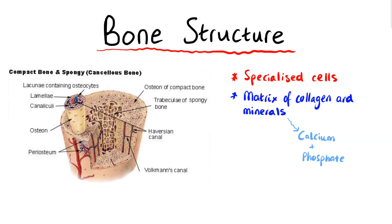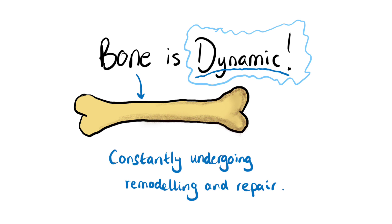In terms of bone structure, bone tissue is composed of cells and a matrix of collagen and minerals, primarily calcium and phosphate. This matrix is what gives the bone its strength and hardness. The bone is not a static structure — it's dynamic, constantly undergoing remodelling and repair.